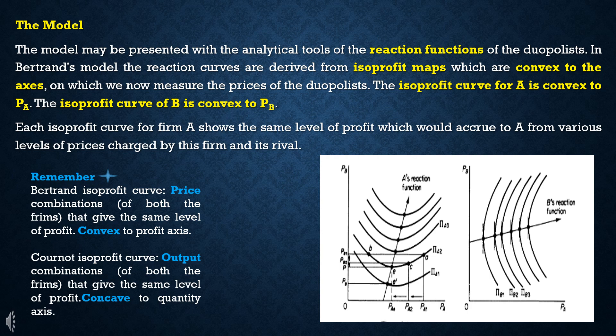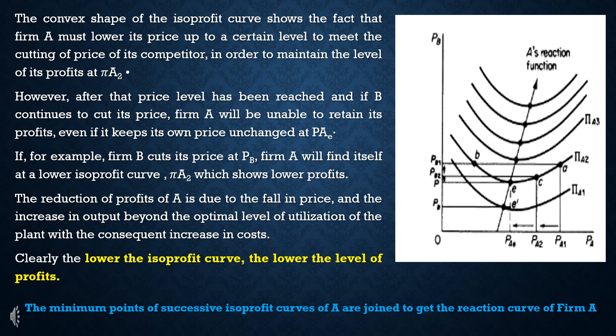The isoprofit curve for firm B shows the same level of profit which would accrue to firm B from various levels of prices charged by firm B and its rival A. The isoprofit curves in their convex shape explain the same level of profit — the price combinations that give the firm the same level of profit. The rival firm needs to reduce its price to maintain the value of its profits.